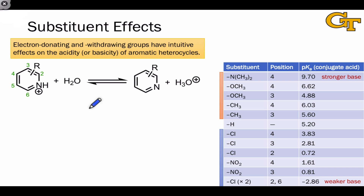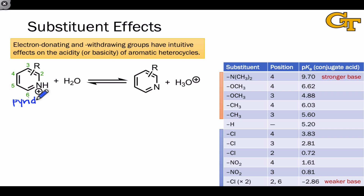Substituents attached to aromatic heterocycles have fairly intuitive effects on acidity or basicity. Think back to the Hammett constant: a substituent on a benzene ring influences the acidity of a carboxylic acid group, and the same effect applies here with protonated pyridines. We can look at the effect of different R groups at different positions around the pyridinium ring and trace those effects back to the electron-donating or withdrawing nature of the R group, using the pKa for this process for different substituents R.